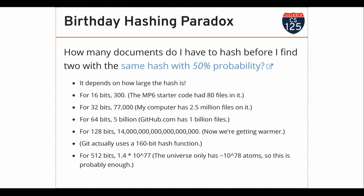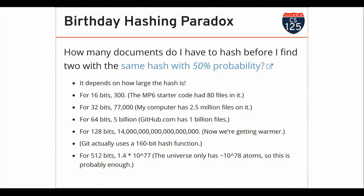I can have hash functions with 512 bits. For a 512-bit hash function I can hash 1.4 times 10 to the 77th files before a collision — only about a tenth of the number of atoms in the universe, so that's probably enough. But you can imagine the early internet guys sitting around saying 'it's probably enough to have 32-bit addresses' — not so much. We've discovered in the world of technology that things get big fast.